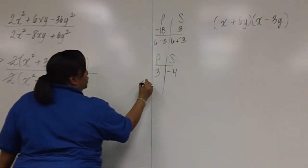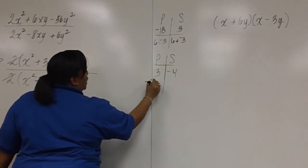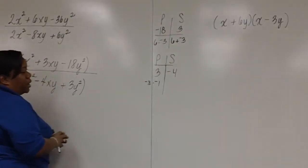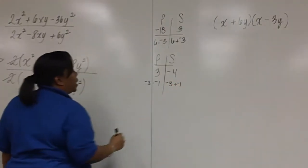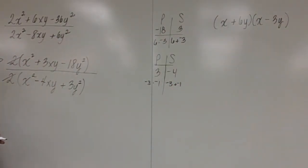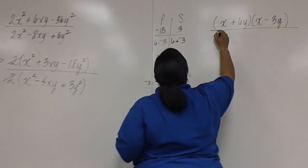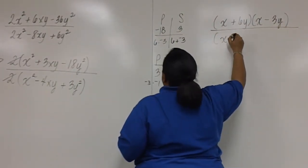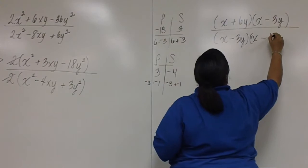Well, we know that negative 3 times negative 1 will give us the positive 3 that we need, and negative 3 plus negative 1 will give us the negative 4 that we need. So when you factor the denominator, you fill in the middle with a negative 3xy and a negative 1xy. After you finish factoring, you should get x minus 3y times x minus 1y.